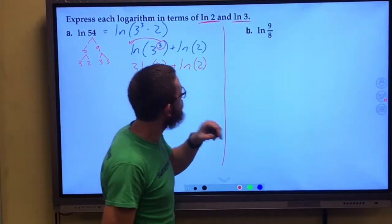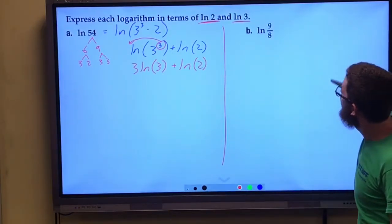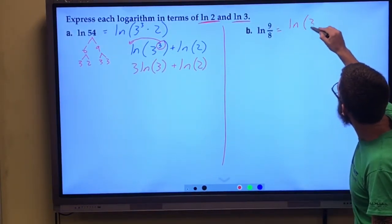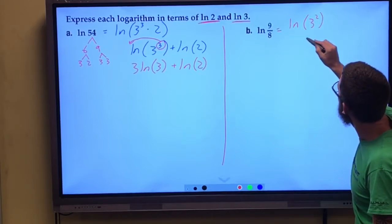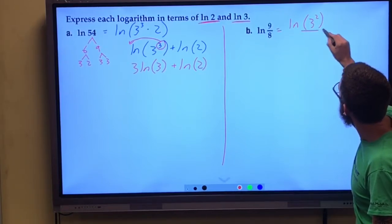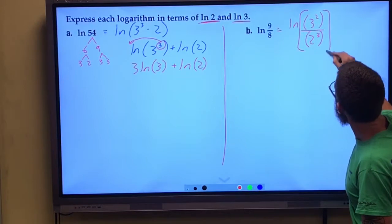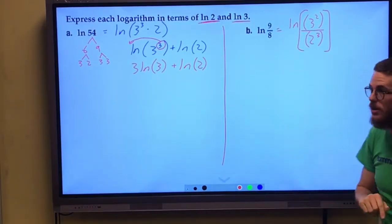Over here, we've got natural log of 9 over 8. Well, hopefully you can see we can change this to be 3 squared is 9. Over down here, we have 8, which is 2 cubed. So we've got natural log of all of this stuff right here.